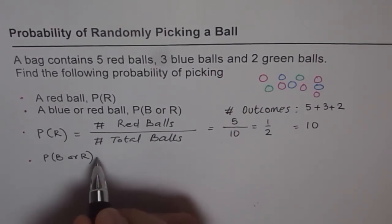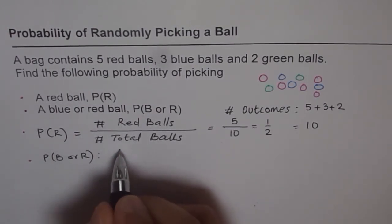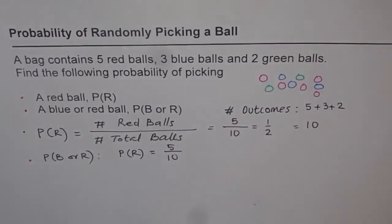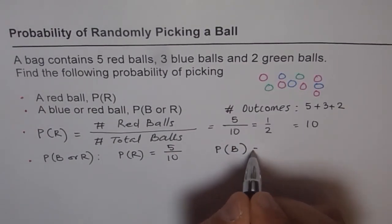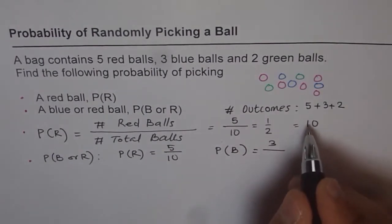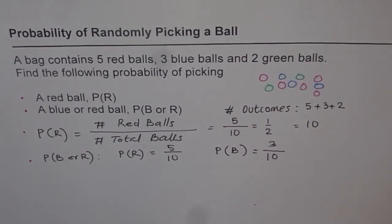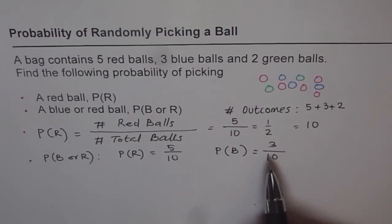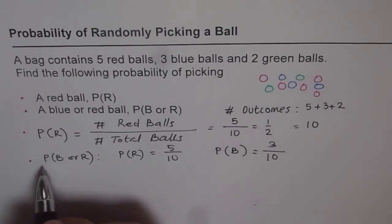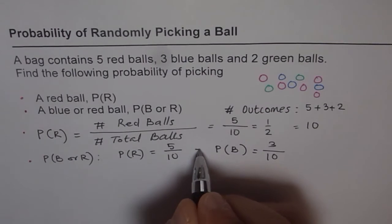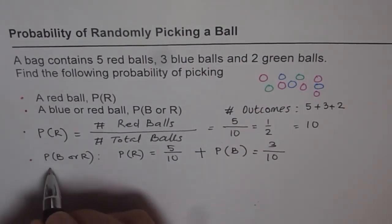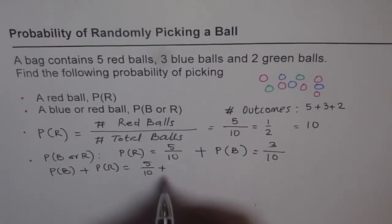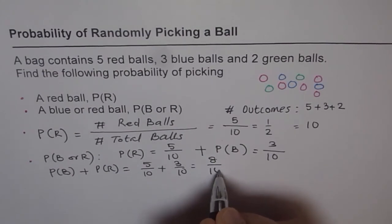Let's figure out how to do these kinds of questions. The probability of picking a red ball, we know, is 5 out of 10. What is the probability of picking a blue ball? There are 3 blue balls out of 10, so 3 out of 10. The probability of picking either a blue ball or a red ball means our chances have increased. So probability of picking this or that is the sum of the two — you add them up: 5 over 10 plus 3 over 10, which is 8 over 10.